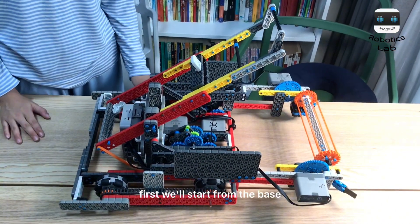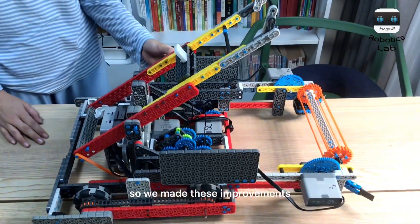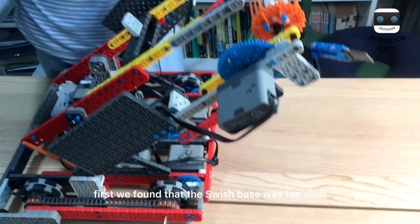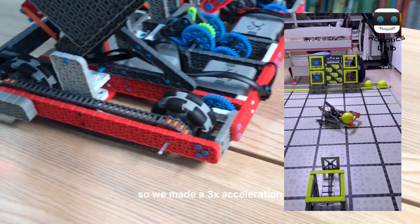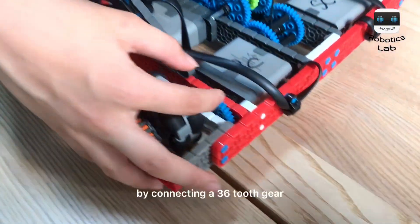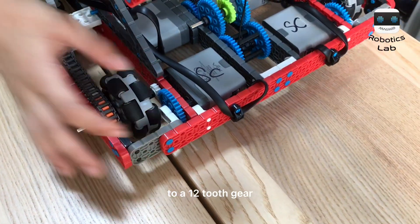First, we'll start from the base. We found a few problems about the Swish base, so we made these improvements. First, we found that the Swish base was too slow, so we made a three-time acceleration on the front wheel by connecting a 36-tooth gear to a 12-tooth gear.